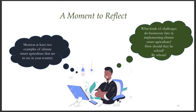Based on our discussion thus far, please address the following questions of reflection: mention at least two examples of climate-smart agriculture that are in use in your country, and what kinds of challenges do businesses face in implementing climate-smart agriculture?